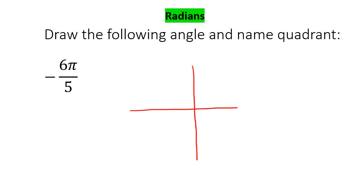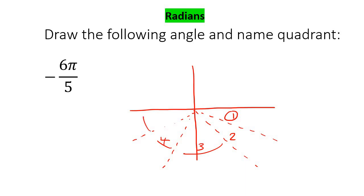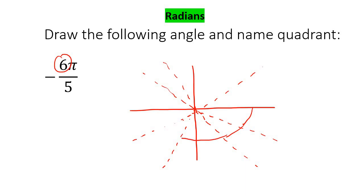Now we need to break it up into five parts. To make five parts, you're not going to use this part over here. So five parts would be something like there, there, there, and there. Here we have one, two, three, four, five parts. We extend the lines and we're going to go back six parts: one, two, three, four, five, six. This helps us work out which quadrant we are in, and we land up in quadrant number two.